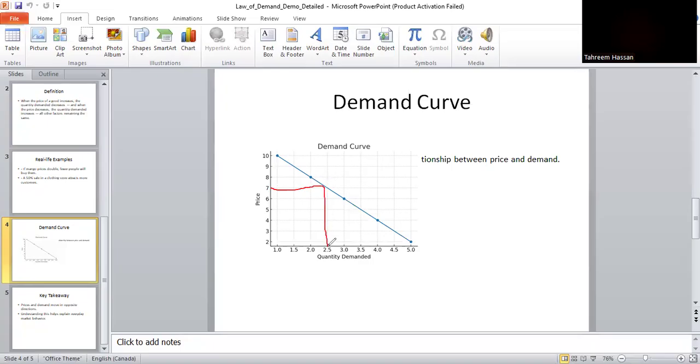For example, if I choose price seven and quantity 2.5, when price increases from seven to eight, look at this - the quantity decreases from 2.5 to 2.0.